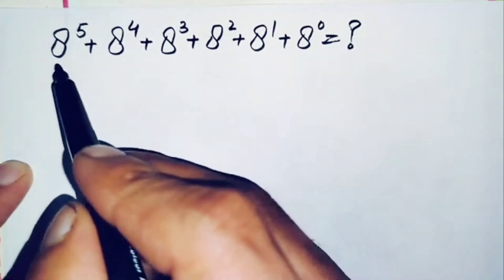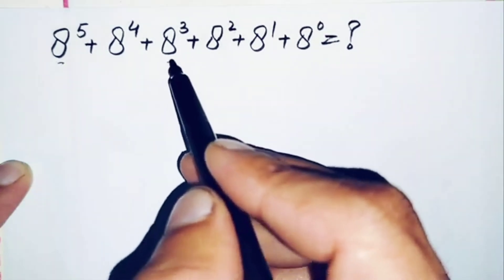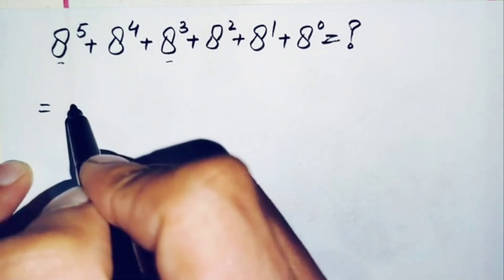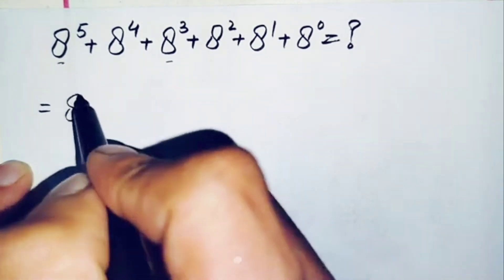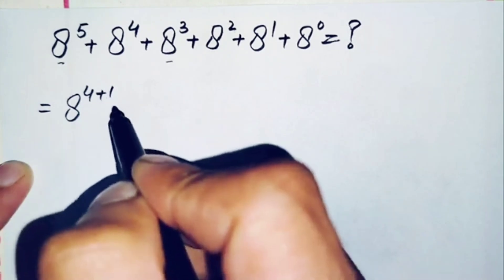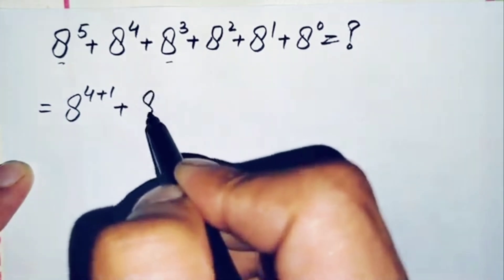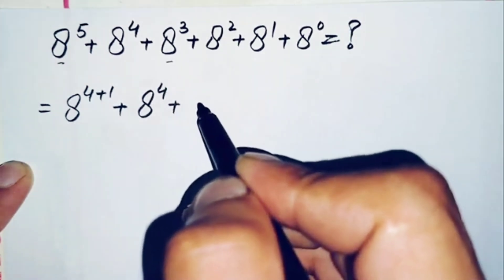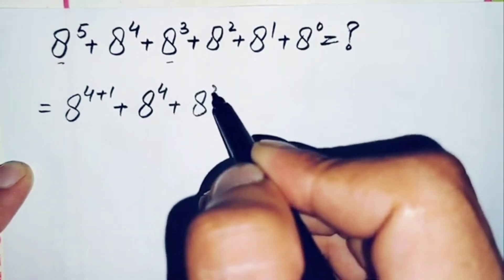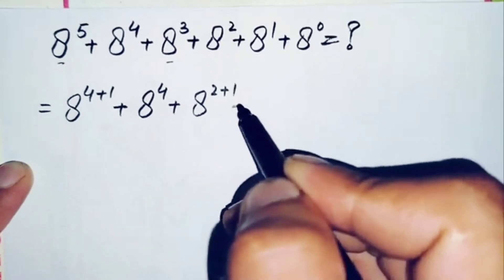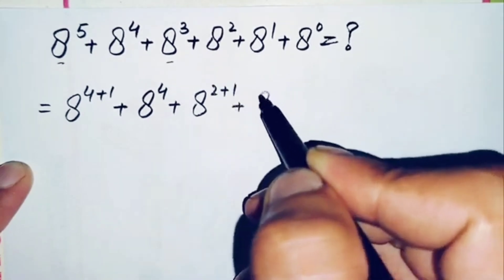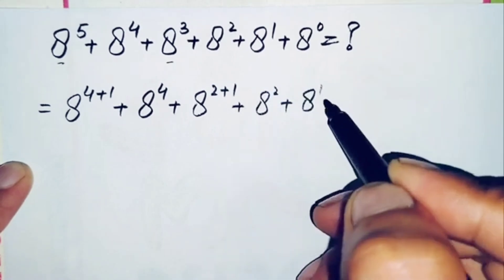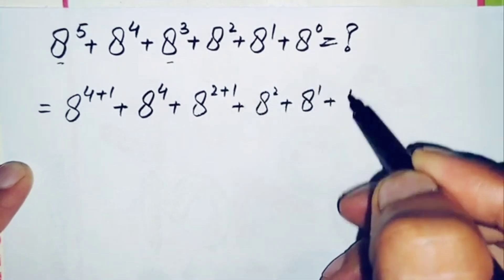First of all, here we will do some changes in two terms: a raised to power 5 and a raised to power 3. We can write a raised to power 5 as a raised to power 4 plus 1, and a raised to power 3 as a raised to power 2 plus 1, using exponent splitting.